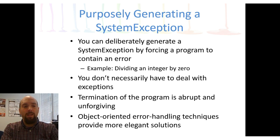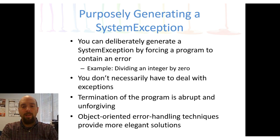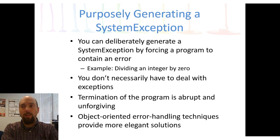We can deliberately generate a system exception by forcing a program to contain an error. If I want to try something like dividing by zero, I can force my program to crash. The question is how do I handle it — do I handle it myself, or do I allow the program to handle the exception? We don't necessarily have to deal with the exception. What we could do is prevent the program from crashing, because if a program crashes we end up with abnormal, abrupt termination, and we could lose data or kick the user out.